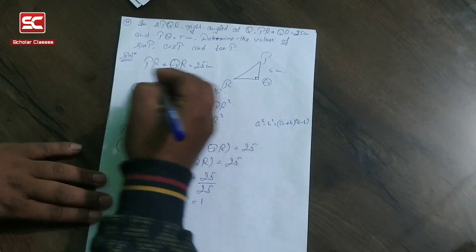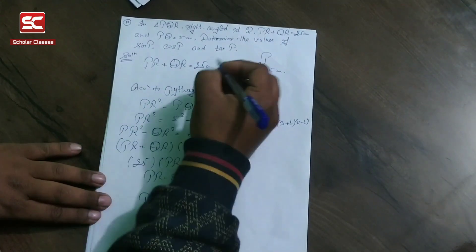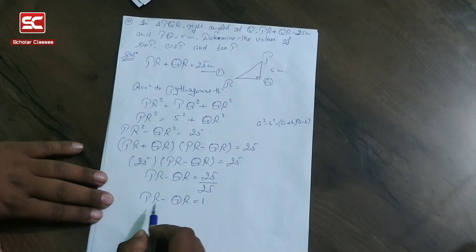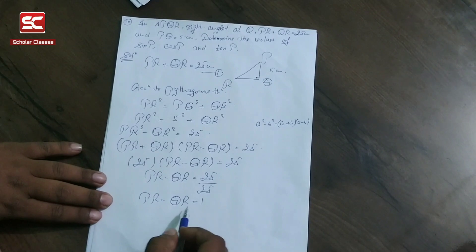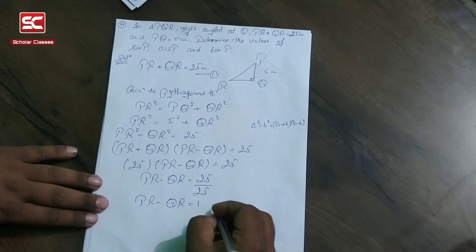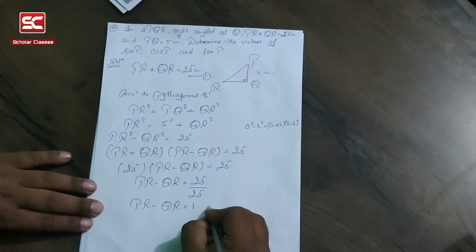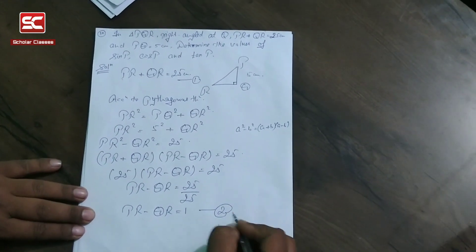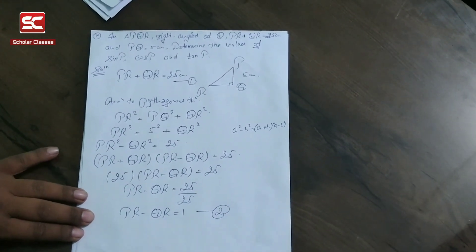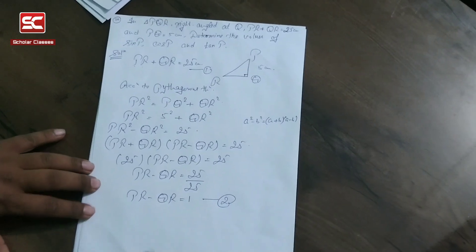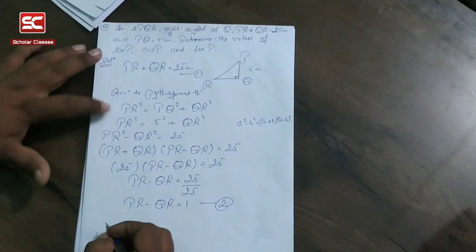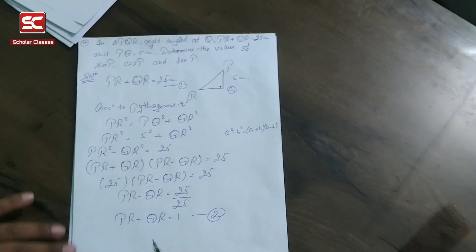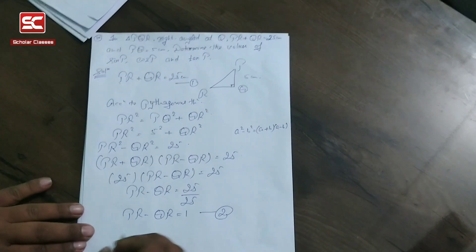We take PR plus QR equal to 25 as equation number 1, and PR minus QR equal to 1 as equation number 2. Now we solve equations 1 and 2 simultaneously.